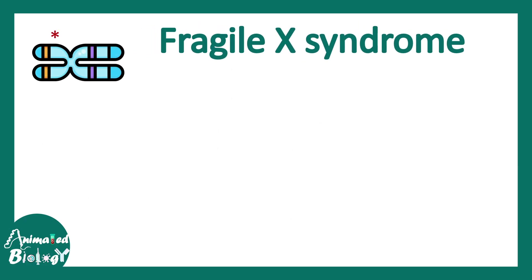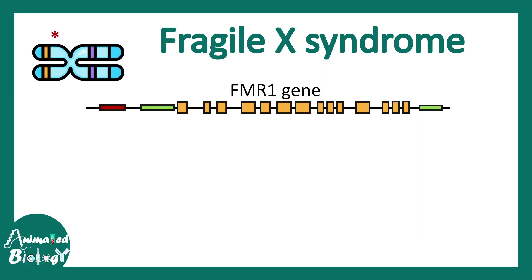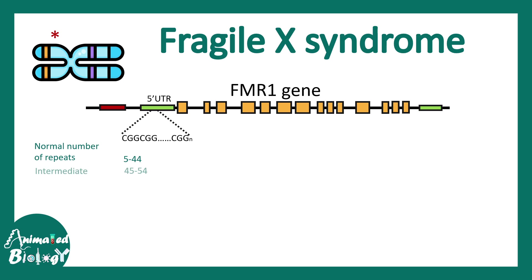Now let's understand the molecular basis in more detail. In the X chromosome there is the FMR1 gene, and in the 5' UTR — the untranslated region — of the FMR1 gene there are multiple CGG repeats. Normally there are 5 to 44 CGG repeats, which is fine and important for normal gene regulation. Sometimes these repeats occur in greater numbers due to problems during replication. There are intermediate, pre-mutation, and full mutation categories of changes.